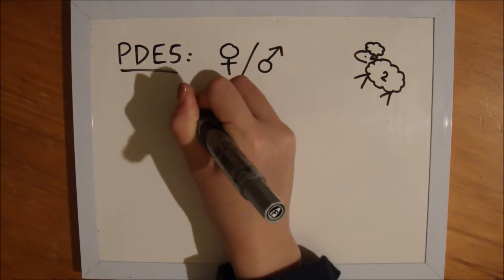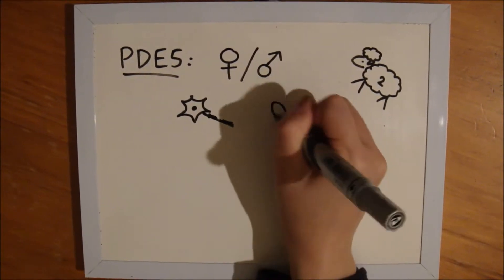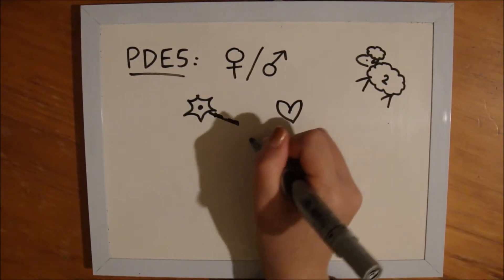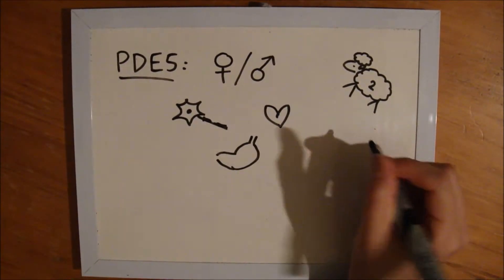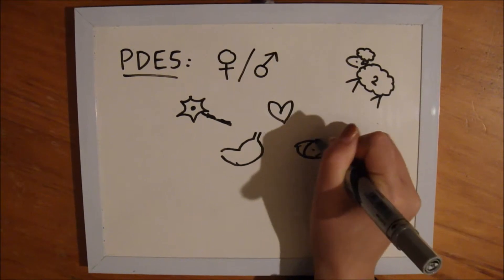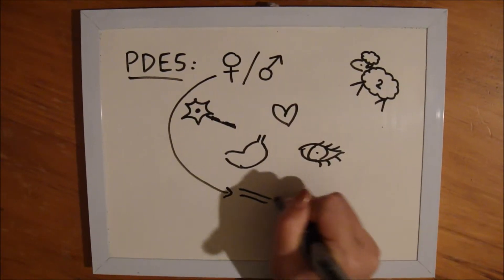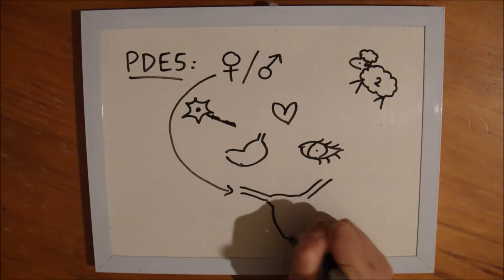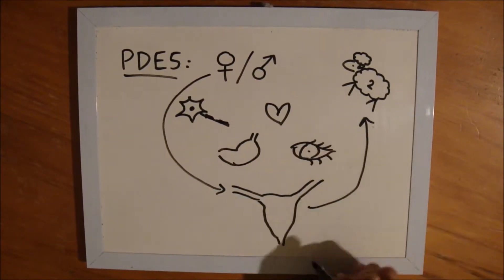PDE5 is found in reproductive organs and neurons. It is also found in smooth muscle cells such as those seen in the heart and gastrointestinal system. There are some side effects in the eye. PDE5 is also found in the uterus of the ewe which will be discussed later in this video.